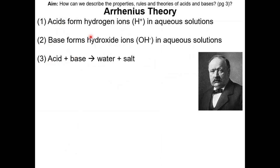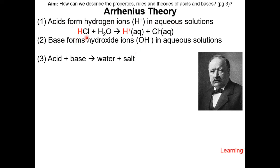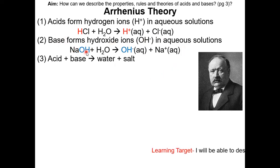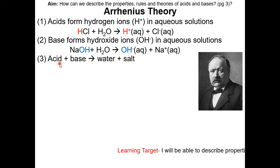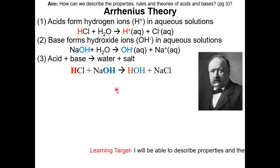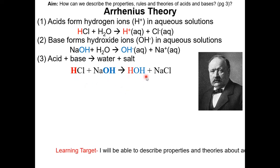Here are the three points of the Arrhenius theory. The first point is that acids form hydrogen ions in aqueous solutions. For example, HCl, which is an acid, when dissolved in water produces H⁺ ions. The second point is that bases form hydroxide ions in aqueous solution — NaOH is a base that when dissolved in water produces hydroxide ions. The third point is that when acids and bases react, they form water and salt. Here we have HCl and NaOH reacting to form water and salt.